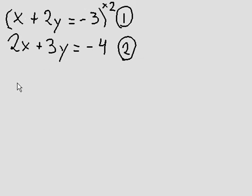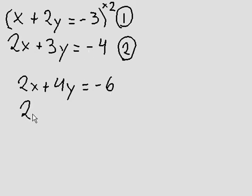So x times 2 is 2x, 2y times 2 is 4y, negative 3 times 2 is negative 6. The bottom equation I'm just going to leave as it is on the bottom, equation number two.